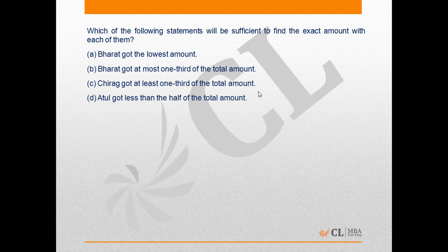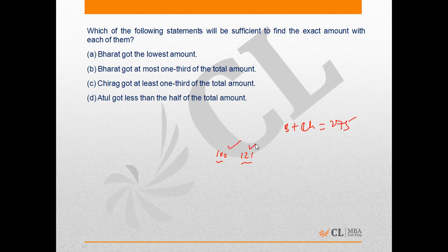The second question asks which statement is sufficient to find the exact amount with each of them. Statement 1 says Bharat got the lowest amount. The possible amounts for Bharat are perfect squares: 100 or 121 (since Bharat and Chirag together receive 275 and Bharat's amount is a perfect square). Since two possibilities remain, statement 1 alone is not sufficient.